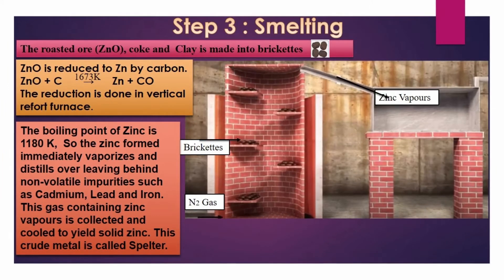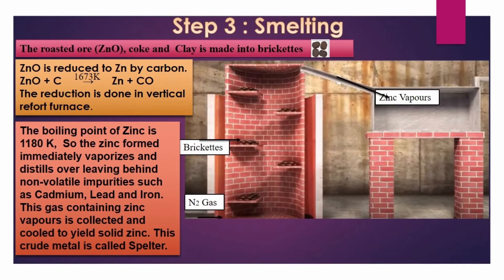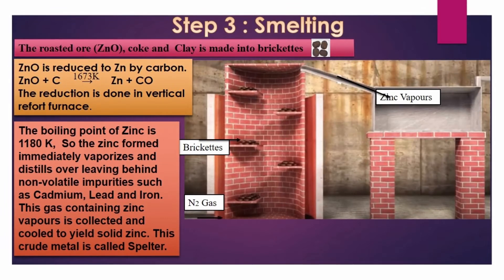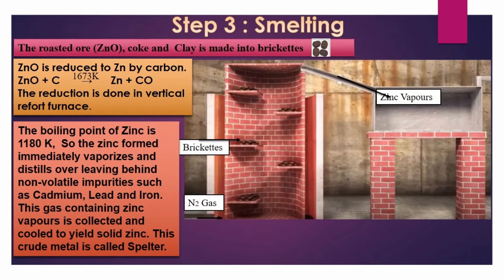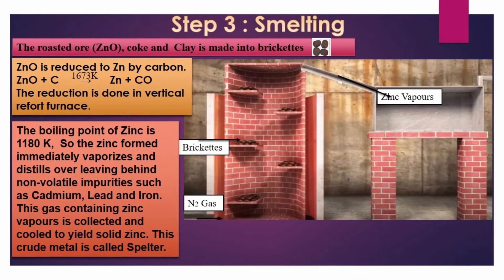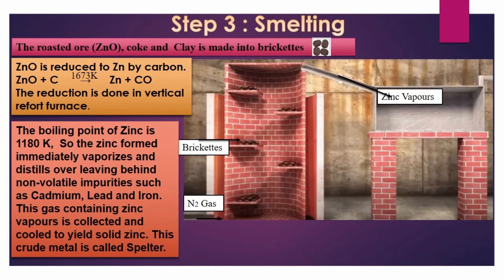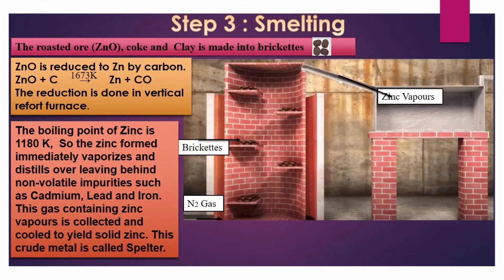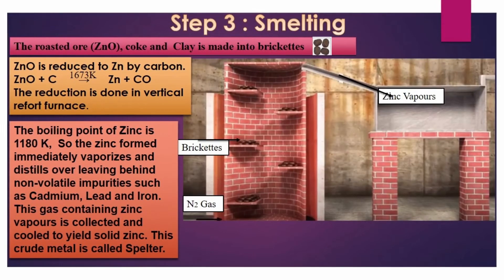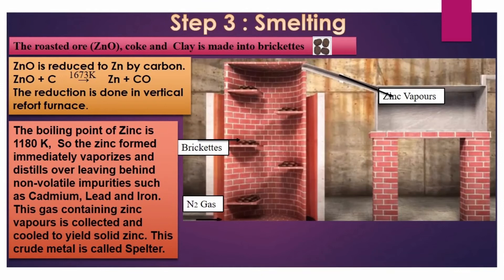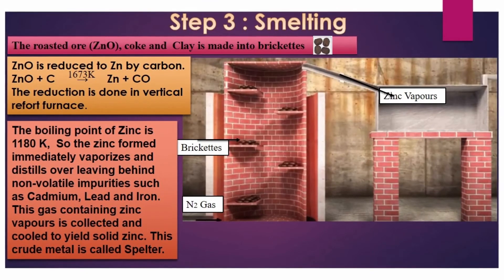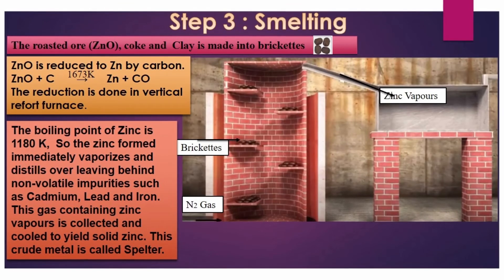These briquets are fed into a vertical retort furnace. This furnace is heated externally to about 1673 Kelvin. At 1673 Kelvin, zinc oxide is reduced to metallic zinc by carbon. The boiling point of zinc is only 1180 Kelvin, whereas in the furnace we have a temperature of around 1673 Kelvin.